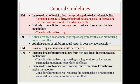Intermediate metabolizers often have a reduced dose of a non-pro drug suggested with close monitoring, and administration of inhibitors could result in poor metabolizer ability. Extensive metabolizers, or normal metabolizers, would expect normal drug metabolism. Ultrarapid metabolizers have an increased risk of treatment failure from non-pro drugs due to increased metabolism, so the physician might consider an alternative drug, start at a higher dose or increase the current dose, and monitor for efficacy. There is also an increased risk of toxicity from pro drugs because of excessive formation of active metabolites.